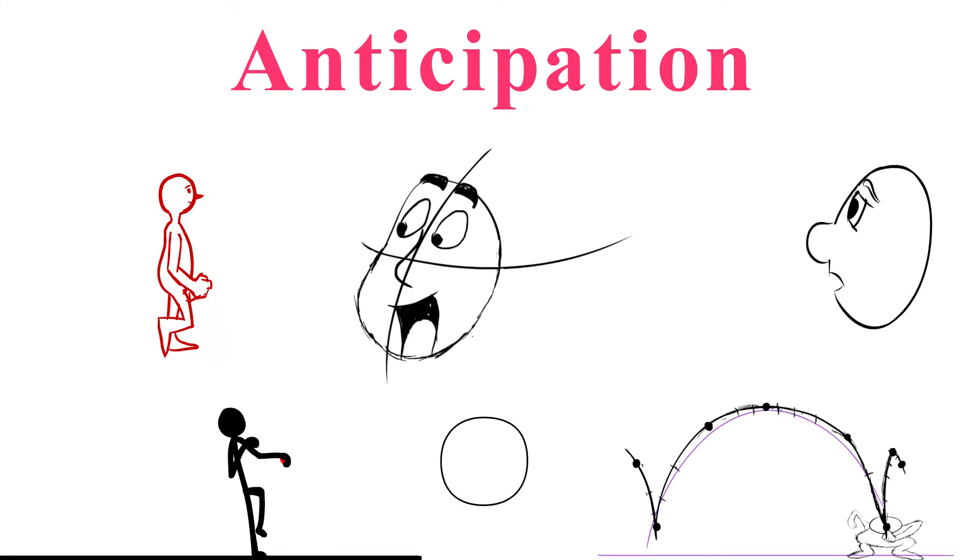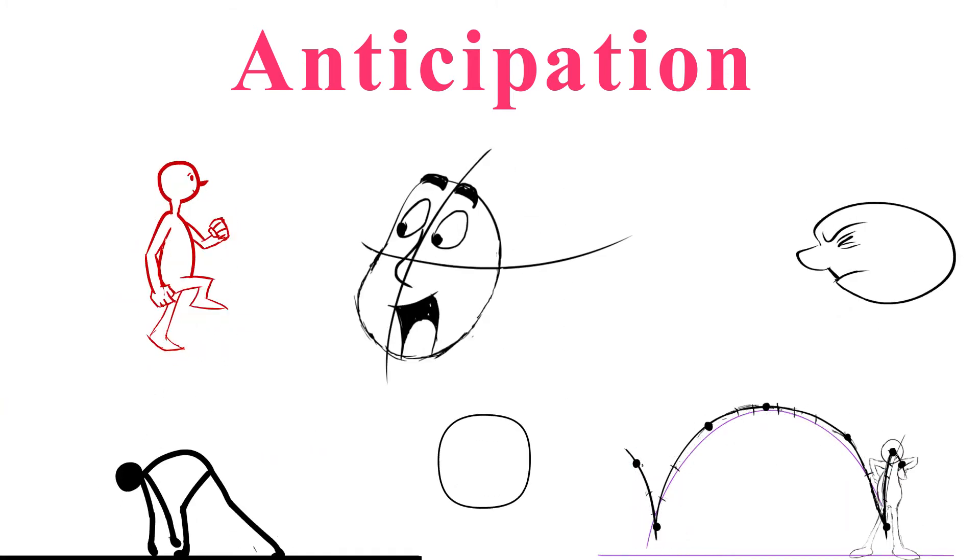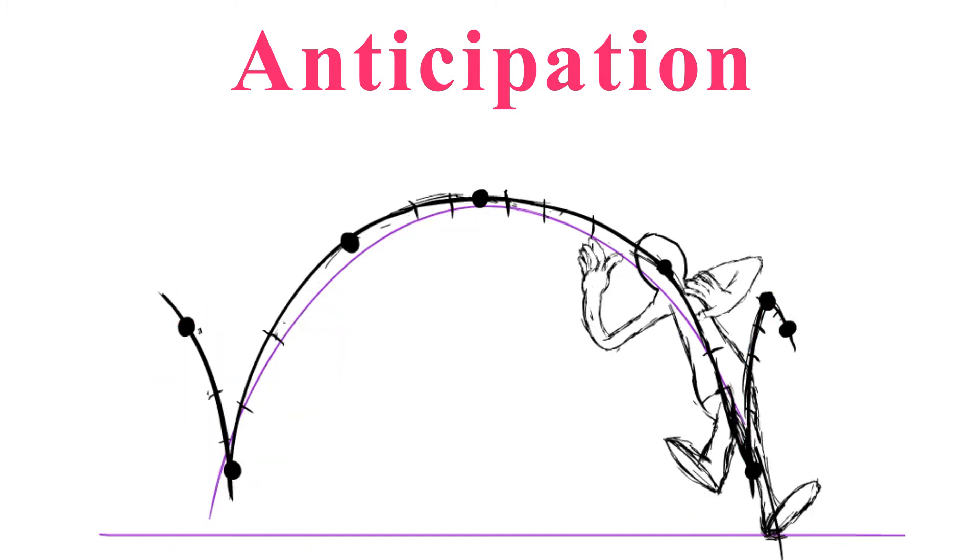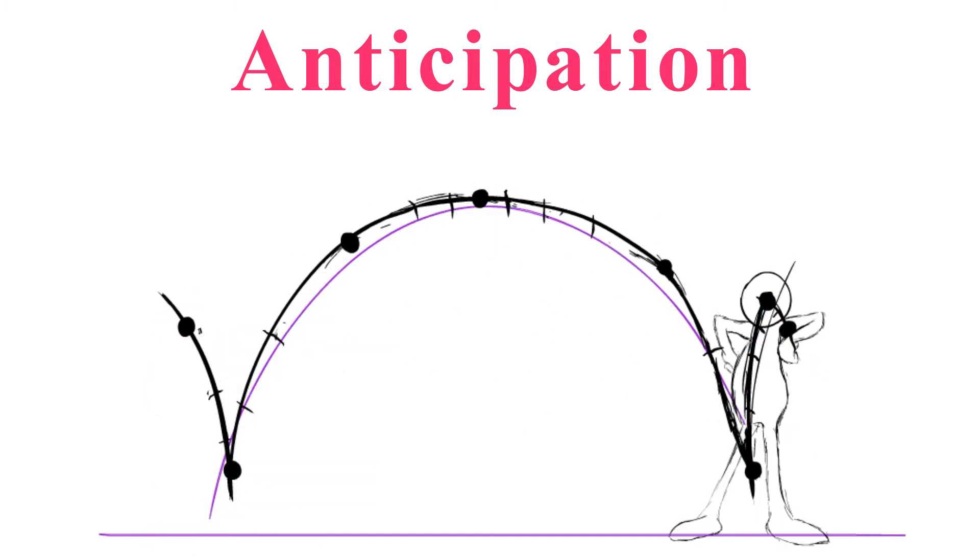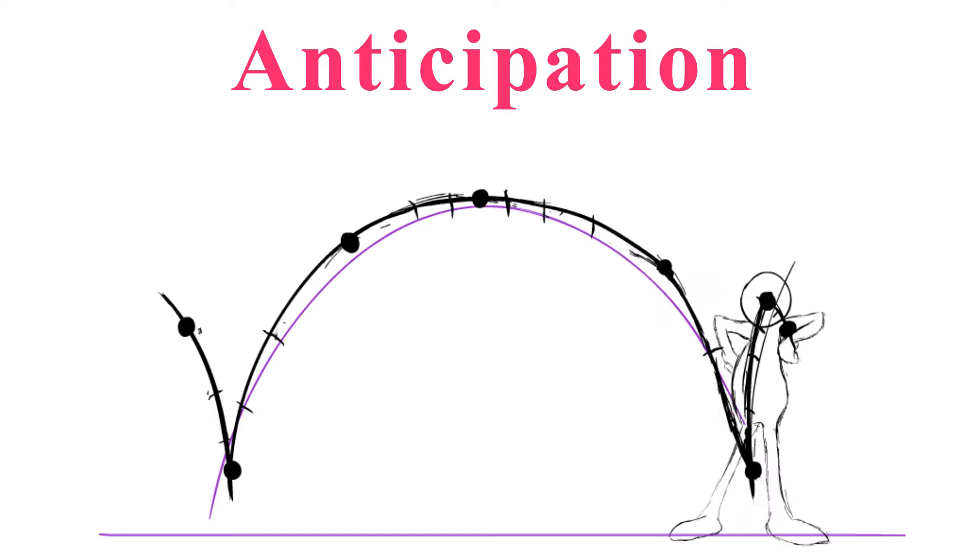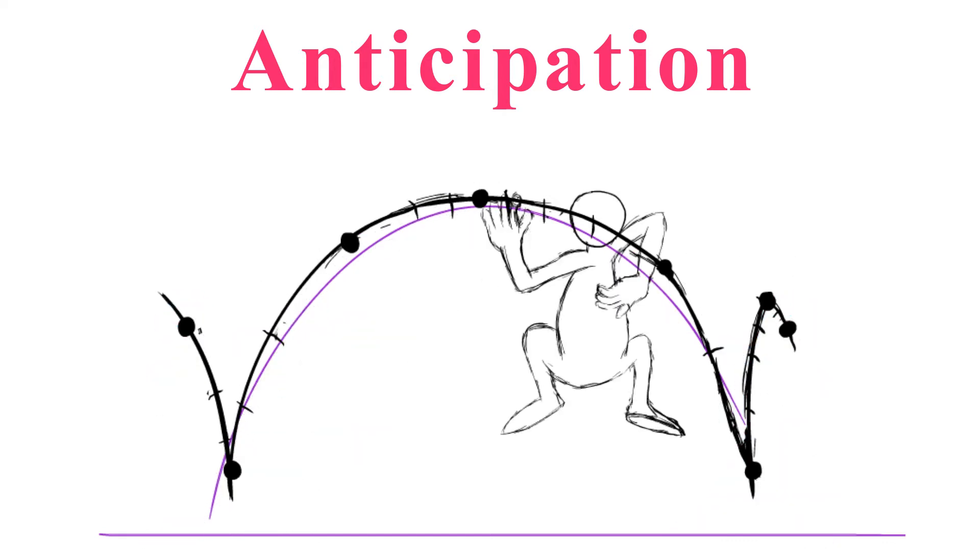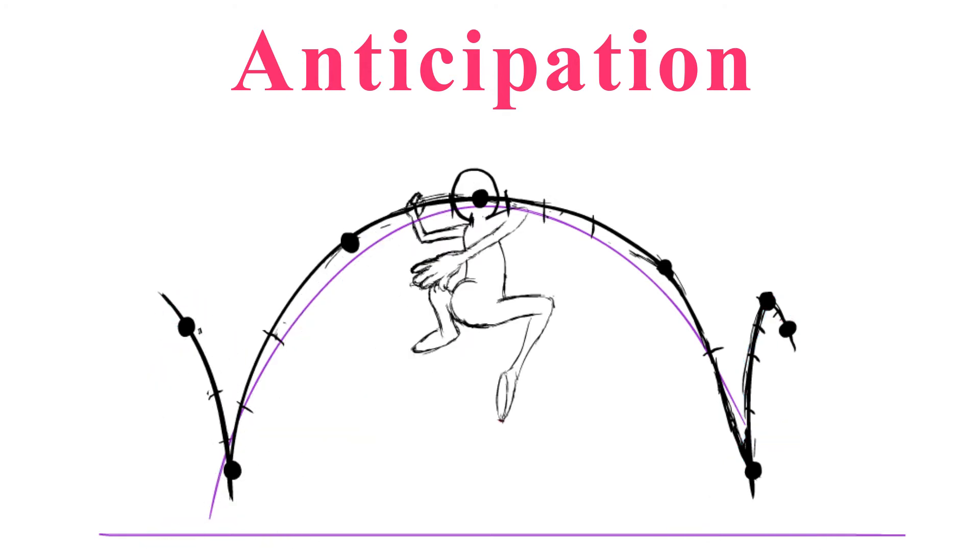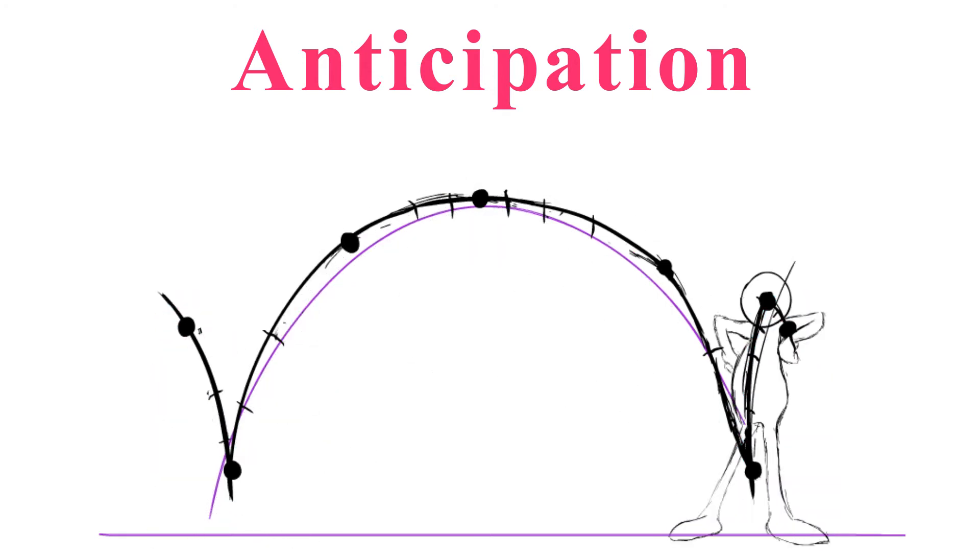Let's understand anticipation with the help of this little jump animation. Just observe the jump animation frame by frame. When the character is jumping, it's preparing itself for the jump by going down and squashing its body up. At that particular time it's building up its energy, and after that the rest of the action happens. That particular point of the action is the anticipation of this main action, which is the jump. So this is how anticipation works.